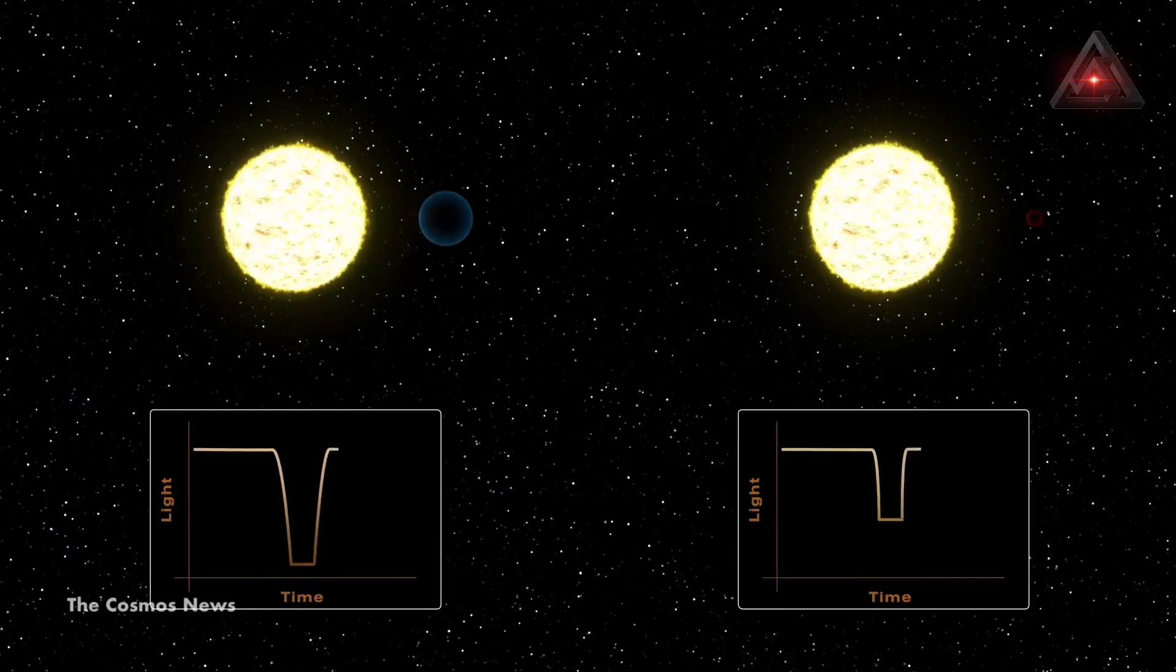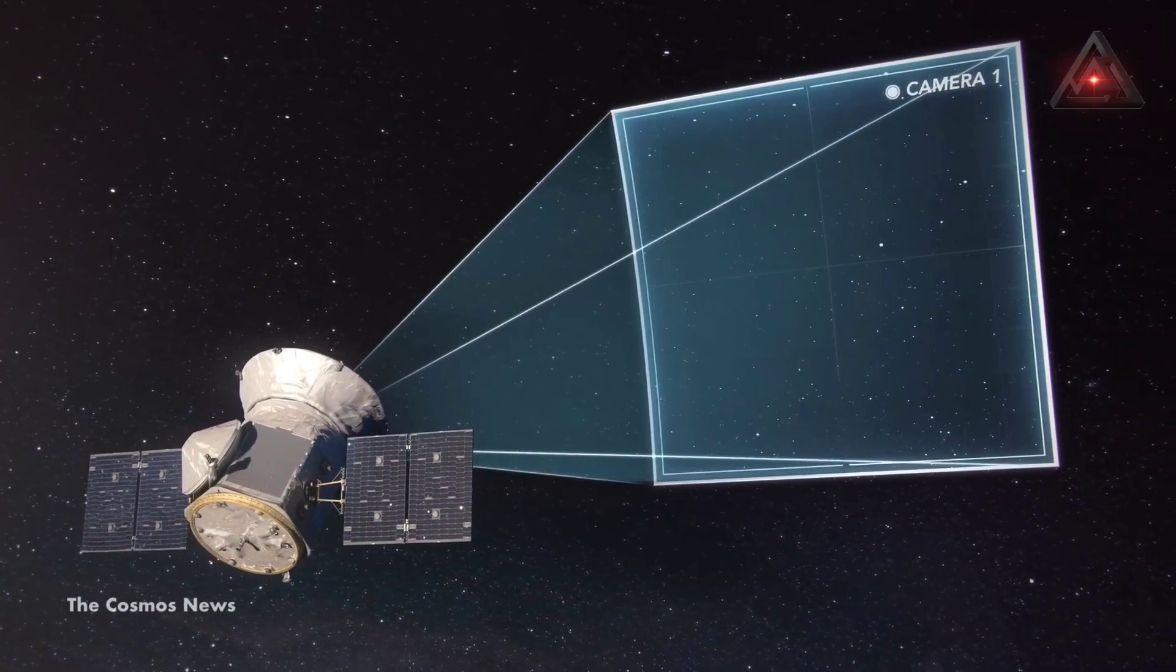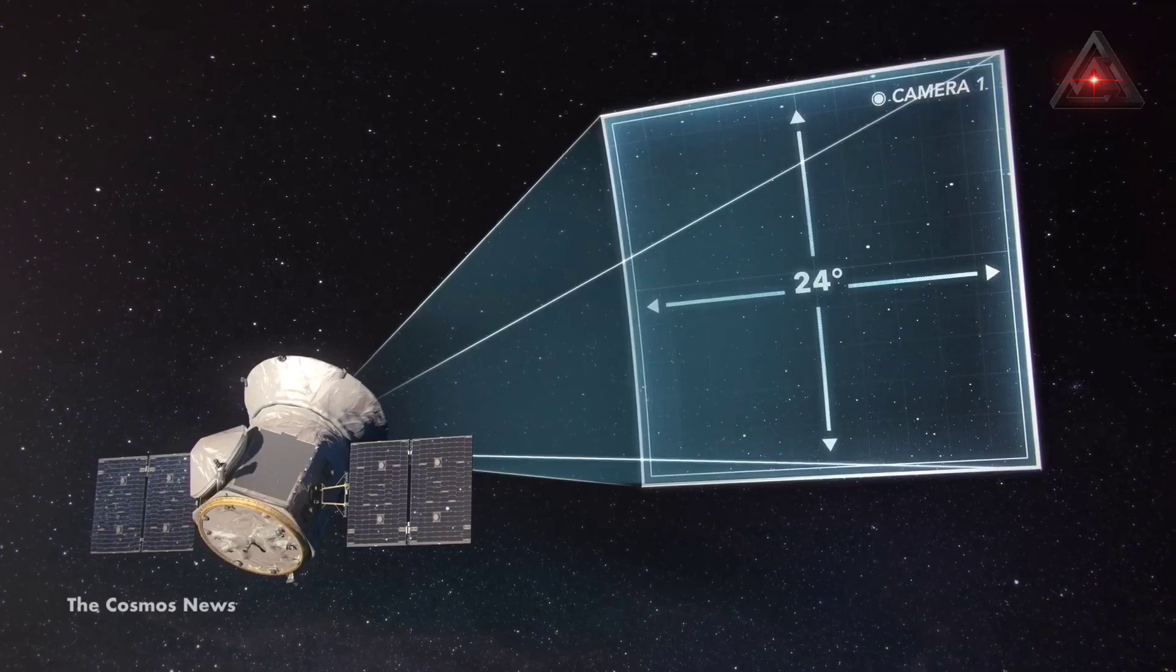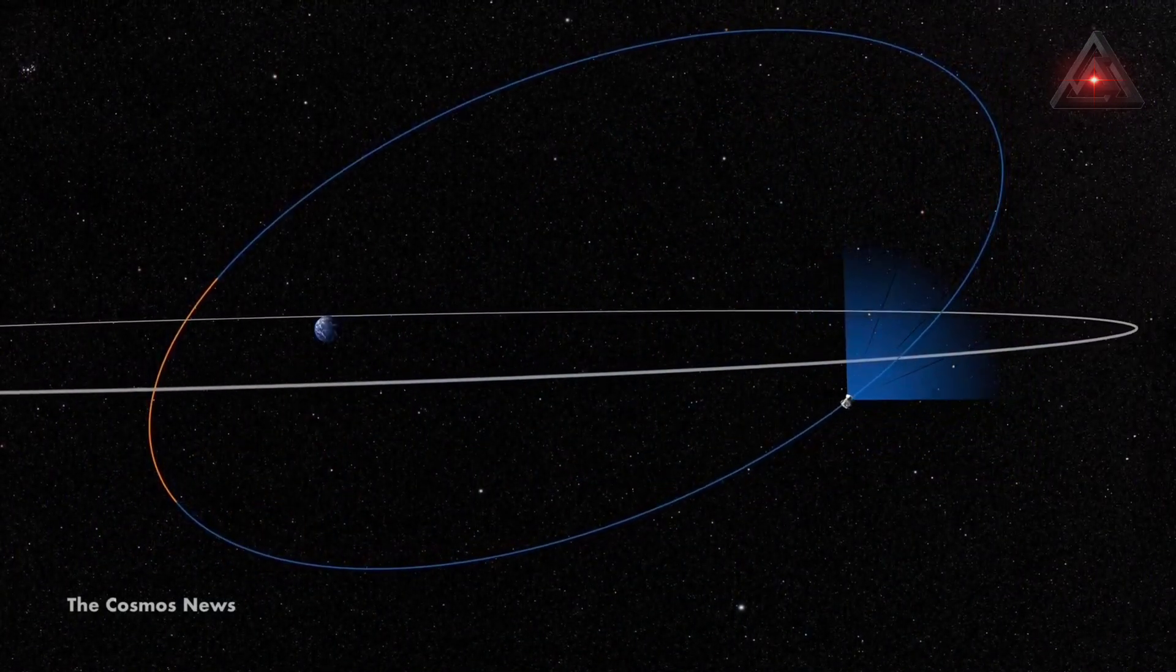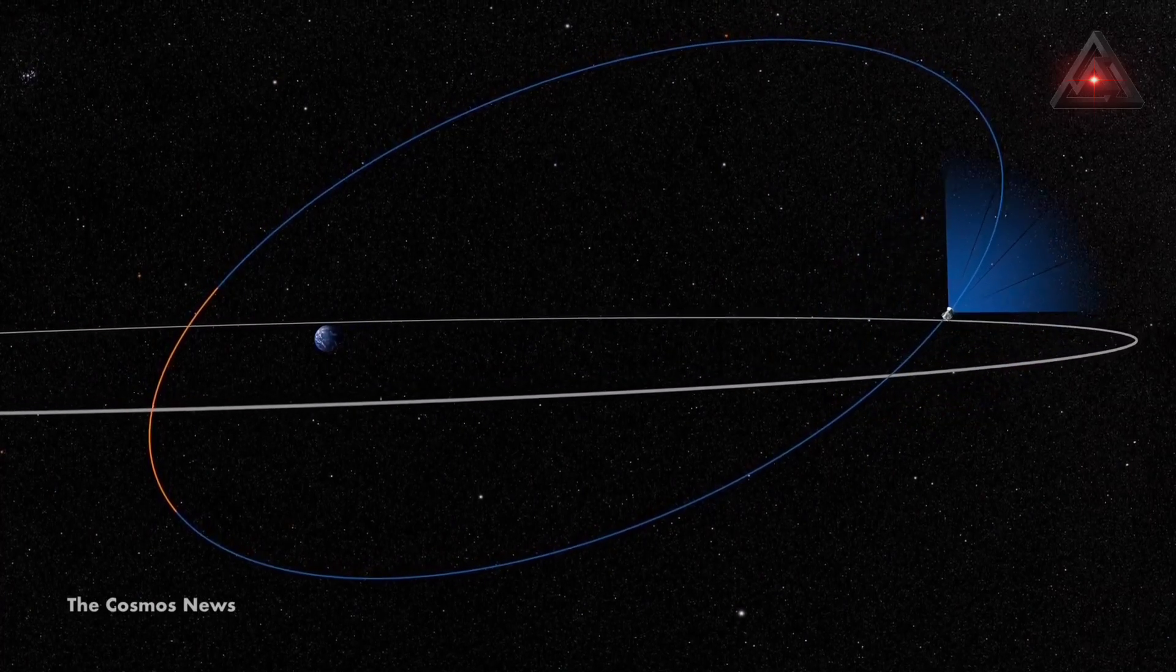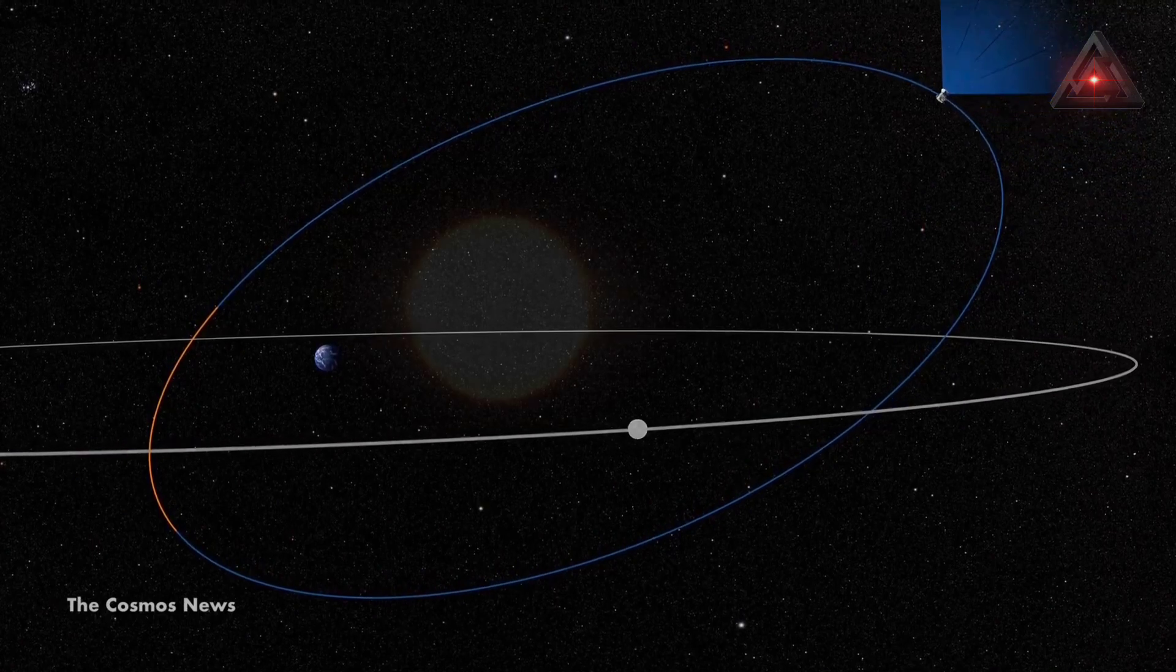While the researchers use other space and ground-based observatories to conduct follow-up observations of the intriguing planetary system, more TESS data is pouring in. TESS just completed its second year of northern sky observations. Scientists are looking forward to the other exciting discoveries hidden in the mission's treasure trove of data.